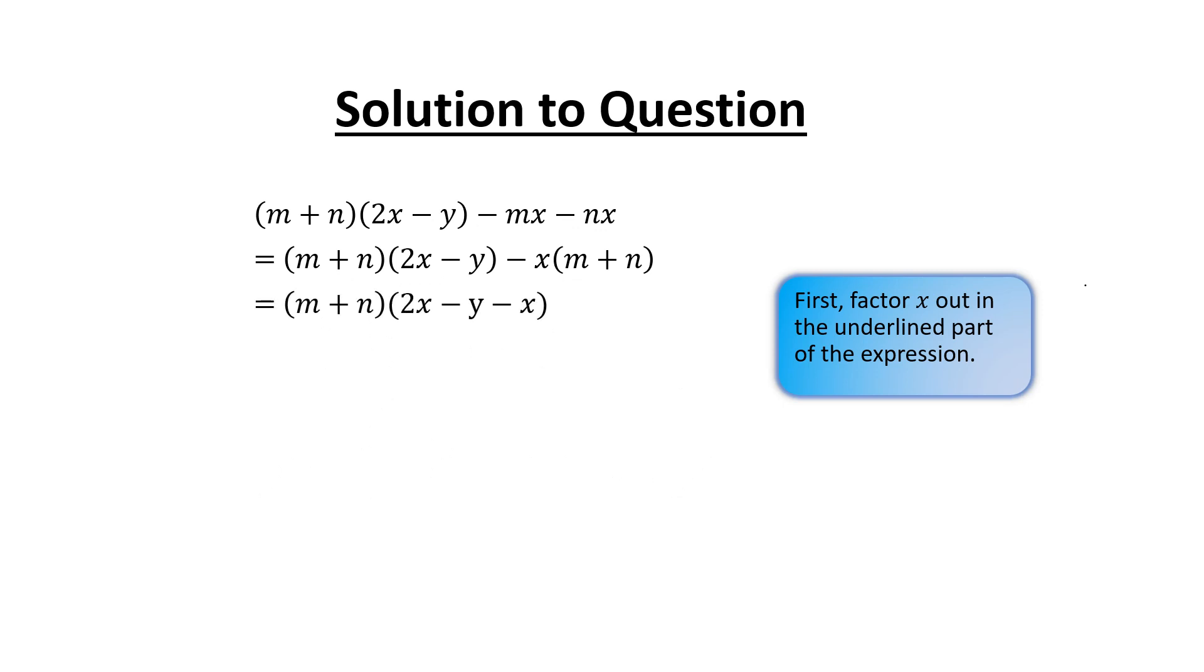Now because m plus n is common, we've done it in such a way that this is b, and this is c. Now bring this negative x close to this 2x so that we can do the subtraction. So we get (m + n)(2x - y - x), which simplifies to (m + n)(x - y). That's our final answer because it cannot be factorized anymore.